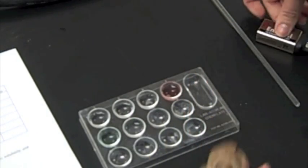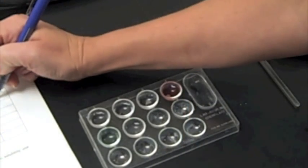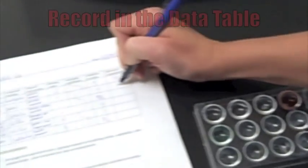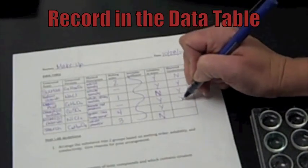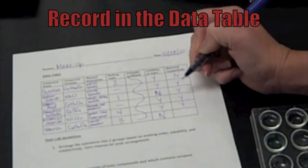So all of them were conductive except for the sucrose was a no. Sodium chloride was a yes. Oxalic acid, cobalt sulfate and nickel chloride were all yeses. The starch was a no.